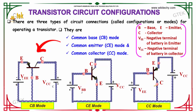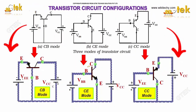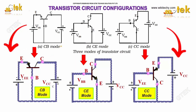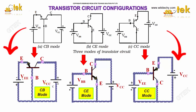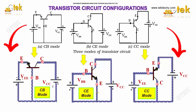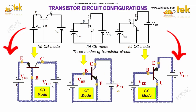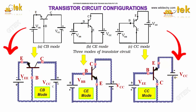This is the actual design of the common base mode — you are able to see the base is in the center, with VEE and VCC on the two sides. In common emitter mode, you have VBB and VCC on both sides for voltage supply. For common collector mode, you have VEE and VCC on both sides.